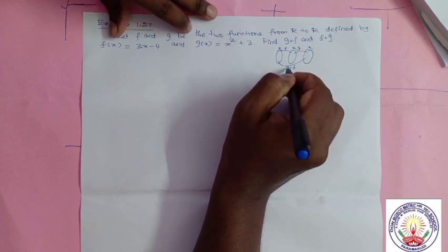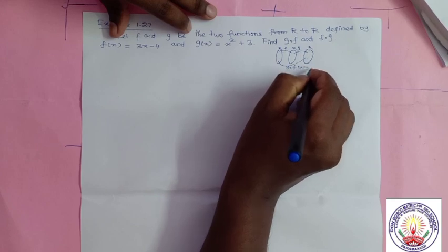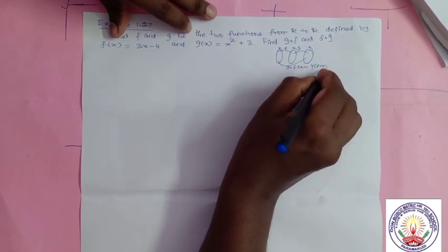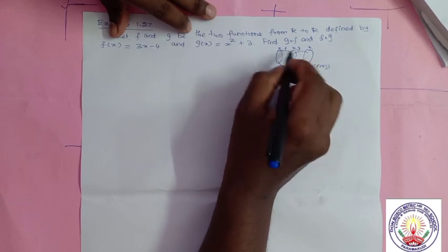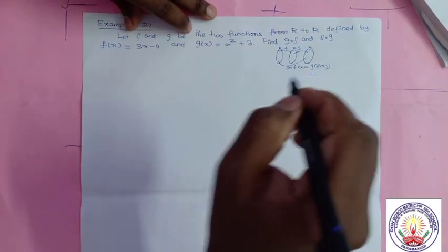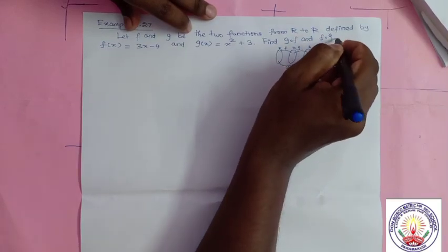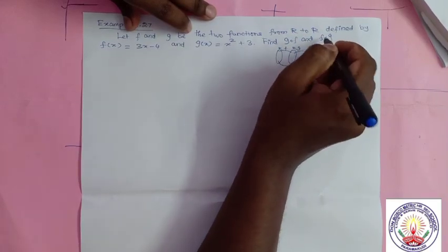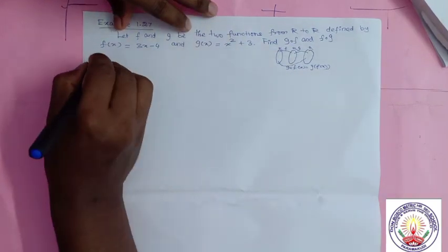We write g composition f of x equal to g of f of x. First the function f of x is defined, then only we can find g. So like that, f composition g means f of g of x. We are going to find these two composition functions.